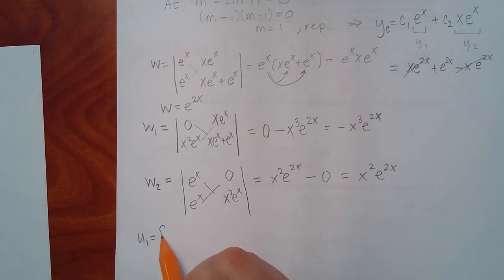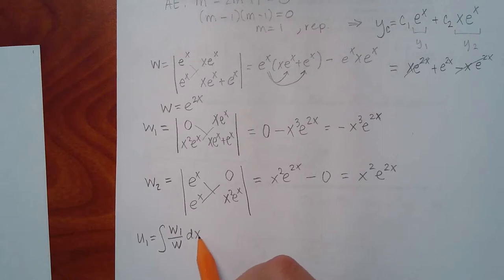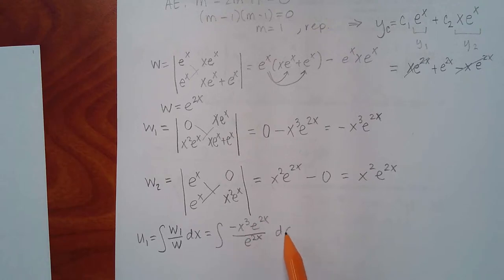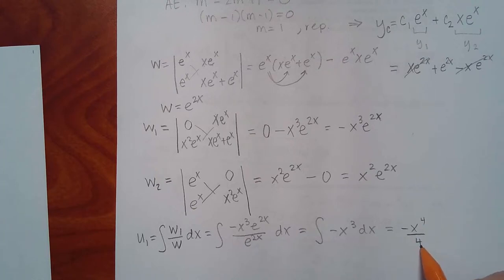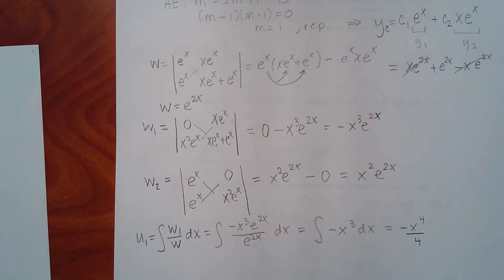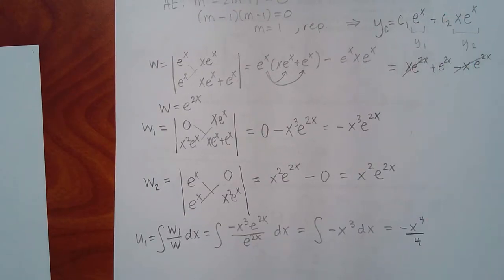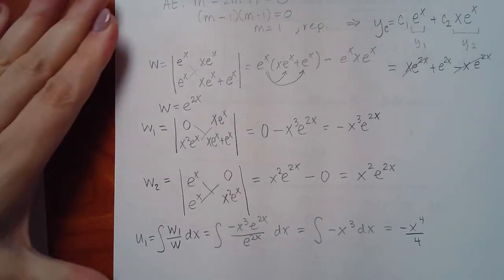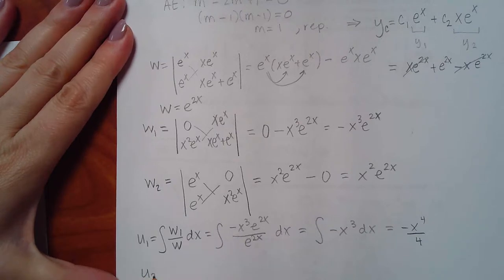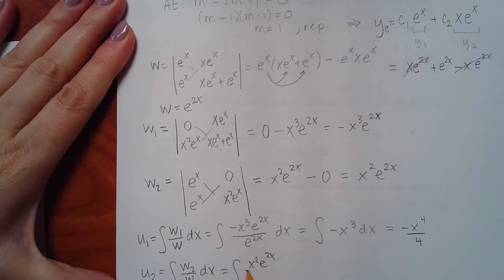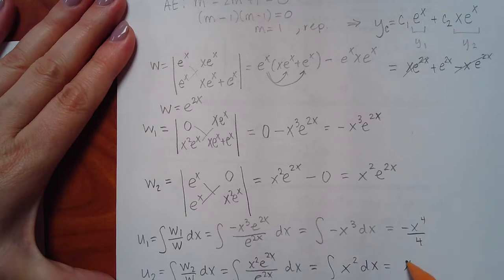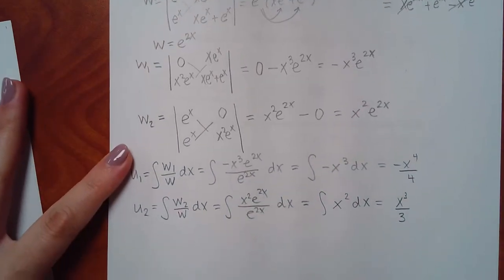To find u1, integrate W1 over W — the e to the 2x cancels and we're just integrating negative x cubed, giving negative x to the fourth over 4. No need for plus-c constants since those are absorbed by c1 and c2. For u2, integrate W2 over W — x squared·e to the 2x over e to the 2x gives x squared, which integrates to x cubed over 3.